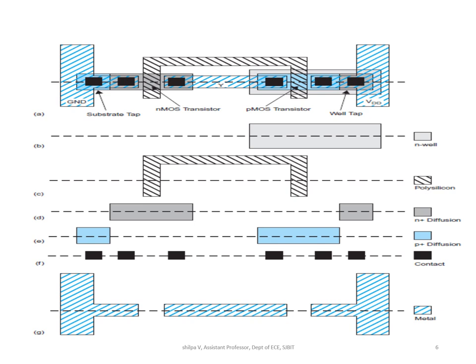This figure shows a top view of all six masks. The cross-section of the inverter from the previous figure was taken along the dashed lines. The six masks are: n-well, polysilicon, n-plus diffusion, p-plus diffusion, contact, and metal.